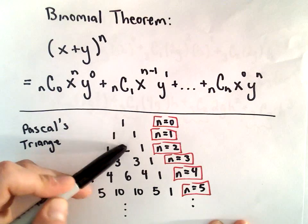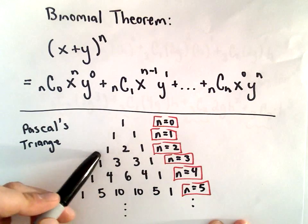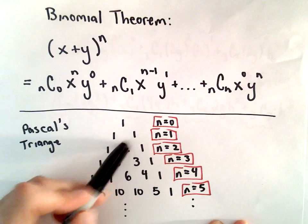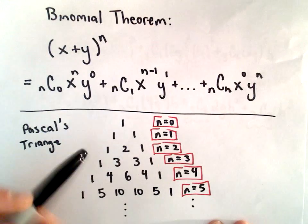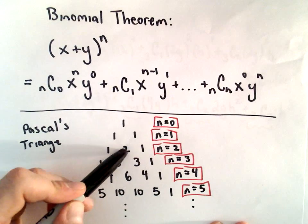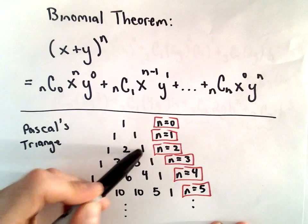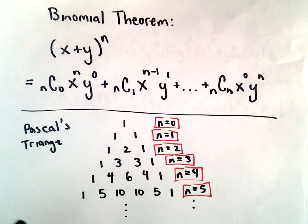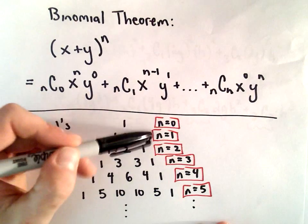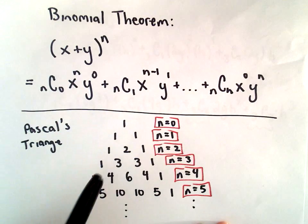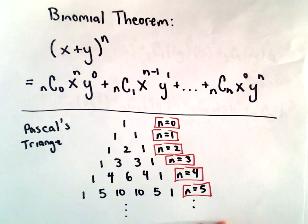And then we start adding those together to get the entry in the next row that's below it. So 1 plus 1 would be 2. So we'd have 1, 2, 1. Again, we put a 1 on the outside. 1 plus 2 will be 3. 2 plus 1 will be 3, etc. And based on the exponent, the numbers in that row will give you the coefficients.